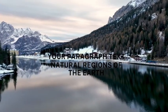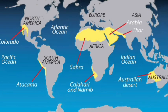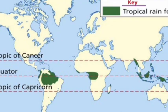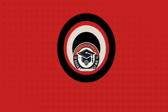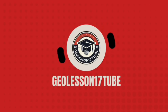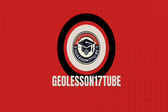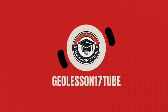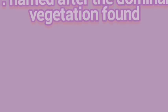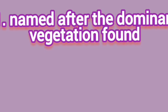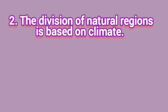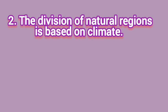List the two criteria used to name natural regions and classify the natural regions into three climate zones. Natural regions are named after the dominant vegetation found in their region. The division of natural region is based on climate.